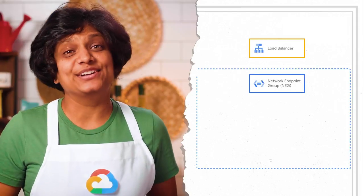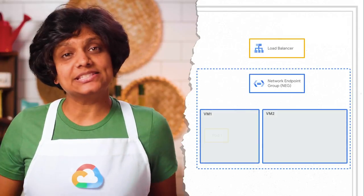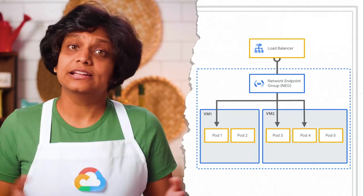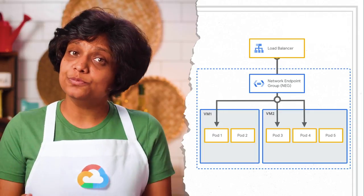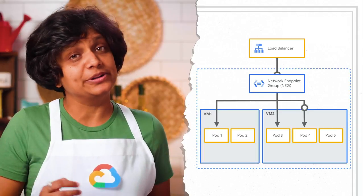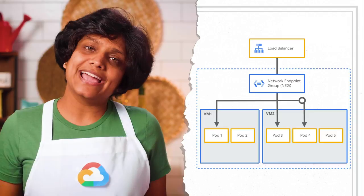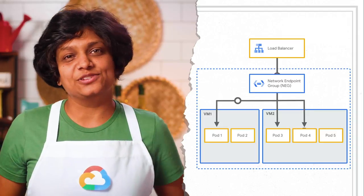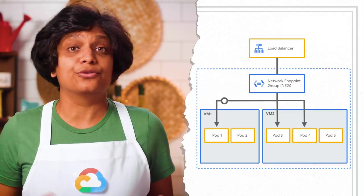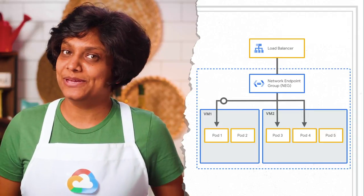But then Google came out with network endpoint groups, or NEGs, an abstraction layer that enables container native load balancing. This means the load balancer has visibility into a Kubernetes cluster's pods, because NEGs are integrated with the Kubernetes Ingress controller running on GCP.